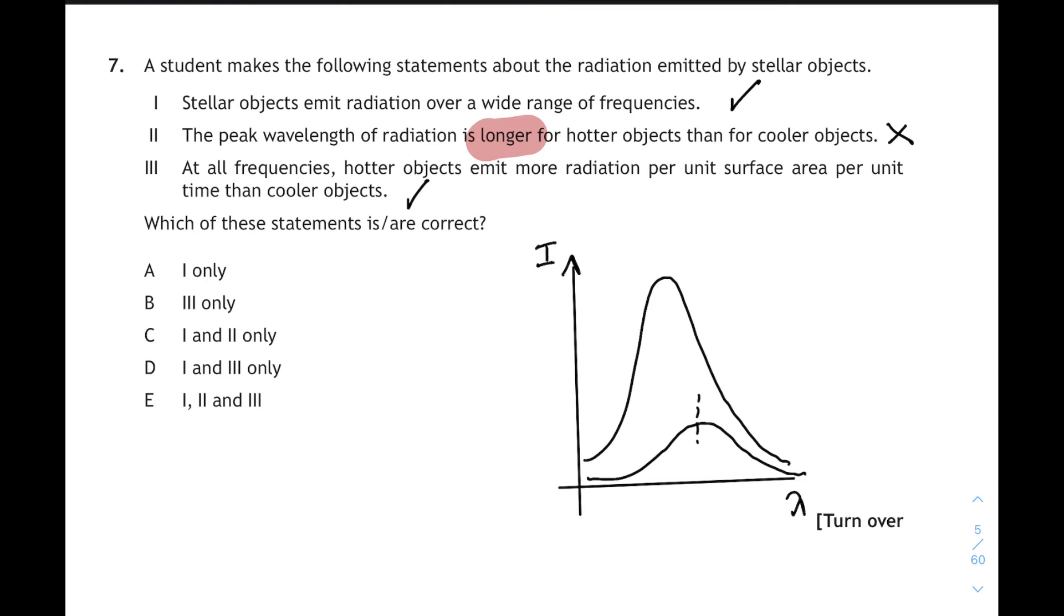A cooler star is the first trace that I drew there. A cooler star has got a longer peak wavelength. A hotter star, that's the second curve that I drew, it's got a shorter peak wavelength, but a far bigger area under the graph. It's emitting far more radiation per unit surface area, per unit time. If it's a hotter star, it's got a shorter peak wavelength, and it's got a higher intensity, or a higher irradiance, across its whole spectrum. So one and three are correct, and one and three means our answer is D.